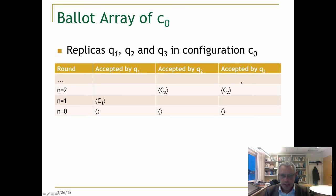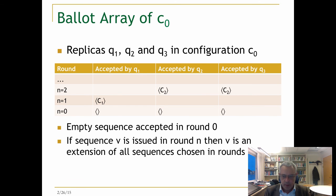The sequence c2, there's a majority accepting the sequence c2. The empty sequence is accepted around zero, and if a sequence is issued around n, then v is an extension of all sequences chosen in rounds less than n.